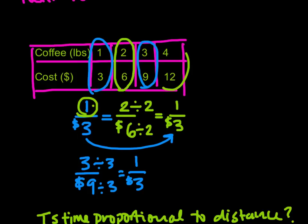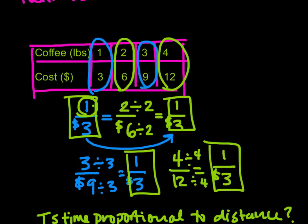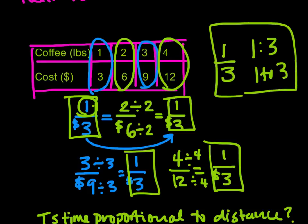And we can check one more time. Is 4 over 12, can that be simplified into 1 third as well? Yeah, it sure can. It can be simplified to 1 over 3. So this has a constant of proportionality of 1 to 3. That is our ratio. It's 1 to 3. So yes, constant of proportionality, this is a proportional relationship. For every pound of coffee, you're going to pay $3 more.